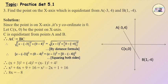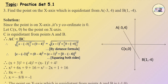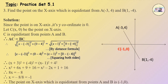Therefore 8x is equal to minus 8. Therefore x is equal to minus 8 upon 8, which is equal to minus 1. Therefore, the point on the x-axis which is equidistant from point A and B is (minus 1, 0).